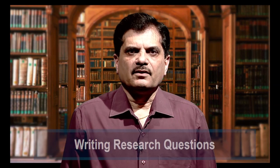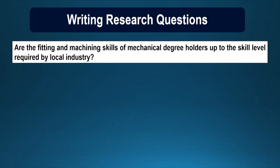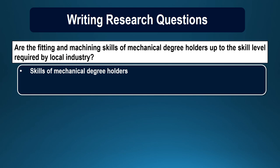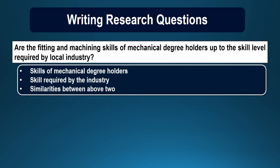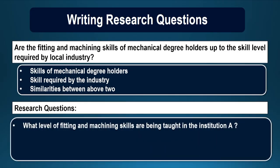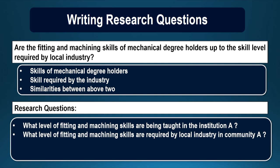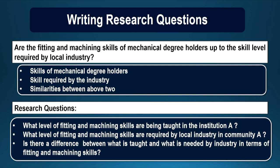When writing research questions, start with the broad question and analyze it into different components. For example: 'Are the fitting and machining skills of mechanical degree holders up to the skill level required by local industry?' Analyzing this broader question reveals three components: skills of mechanical degree holders, skills required by industry, and similarities between the two. Based on these three components, you can write three research questions: 'What level of fitting and machining skills are being taught in institution A?' 'What level of fitting and machining skills are required by local industry in community A?' and 'Is there a difference between what is taught and what is needed by industry in terms of fitting and machining skills?'